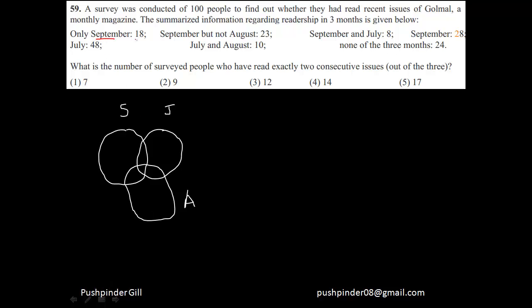It says only September is 18, so this area here is only September. September but not August will denote this area and this area, because this whole area is September and this whole area is August. So the whole area of September but not August — not including the overlapping parts — means this plus this would be equal to 23. That means this remaining area is equal to five.